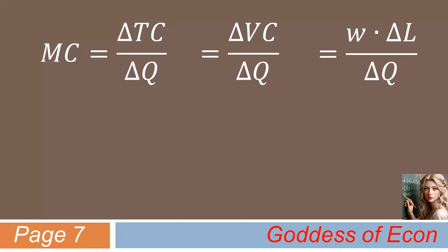And if we put delta L over delta Q into a parenthesis, the marginal cost equals the following. Wait, wait, wait a minute.